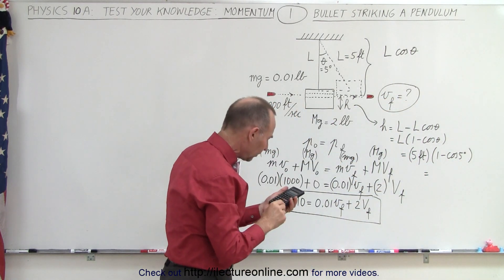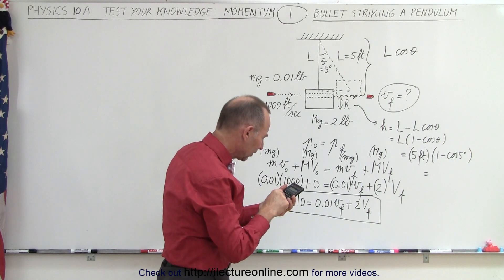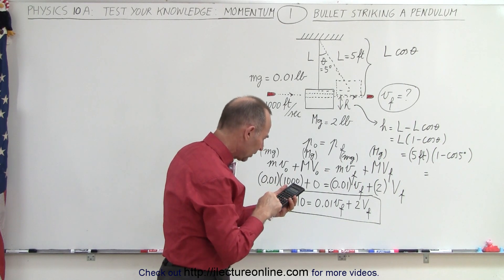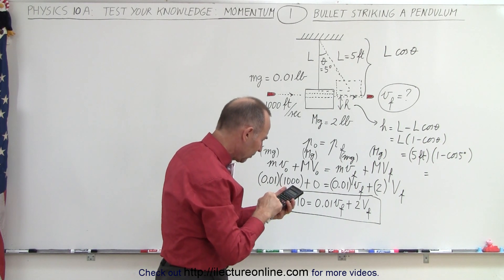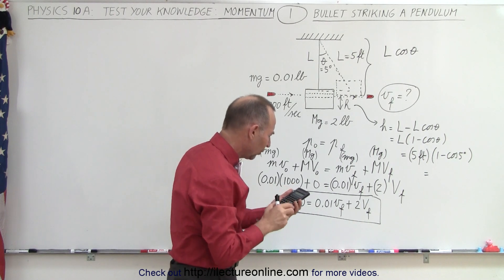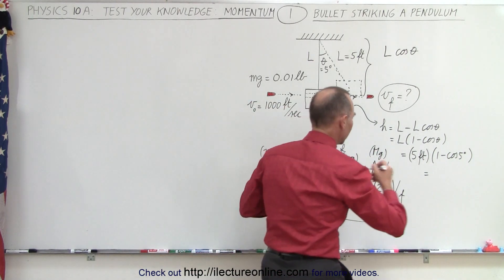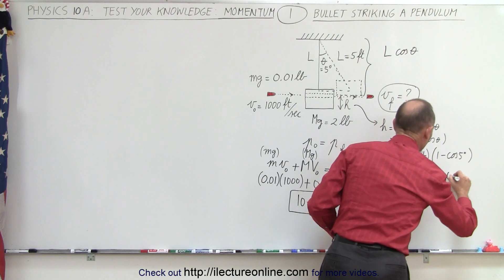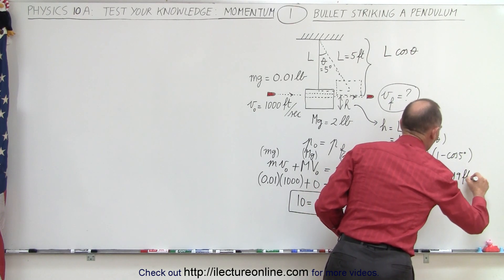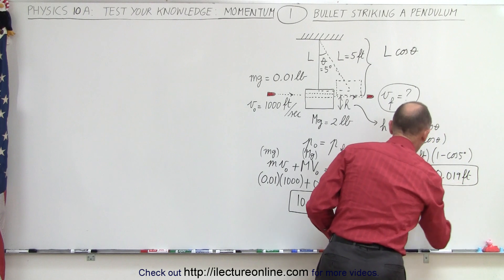This equals five feet multiplied times (1 - cosine of 5 degrees). Let's see how big that height differential is. We take five, take the cosine of that, subtract from one, and multiply times five feet, and we get 0.019 feet.